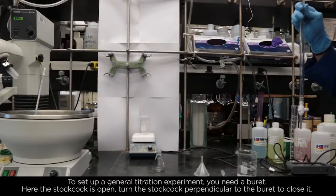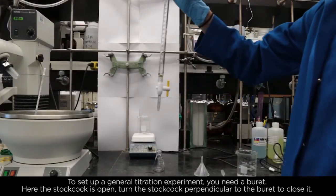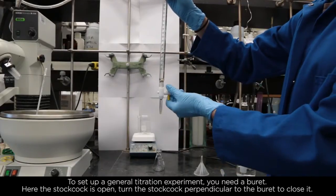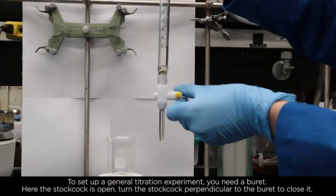To set up a general titration experiment, you need a burette. Here, the stopcock is open. Turn the stopcock perpendicular to the burette to close it.